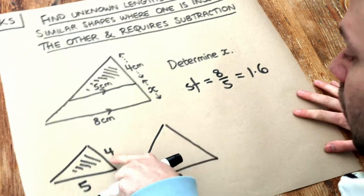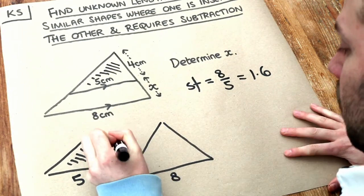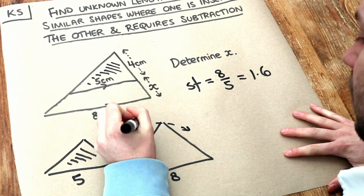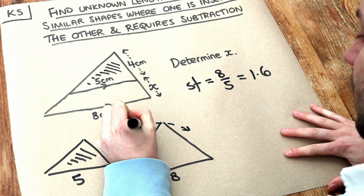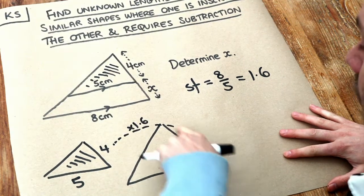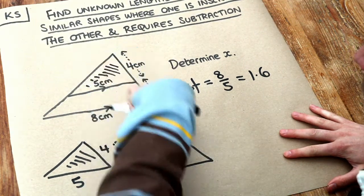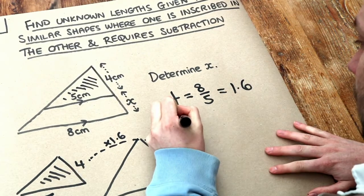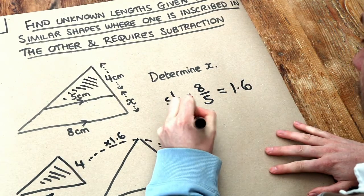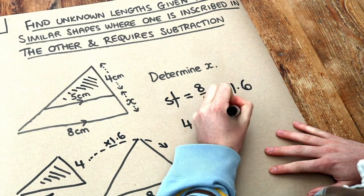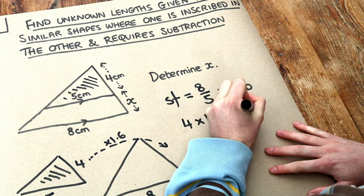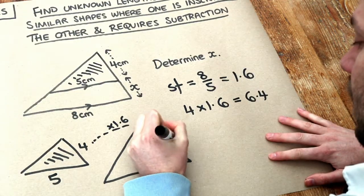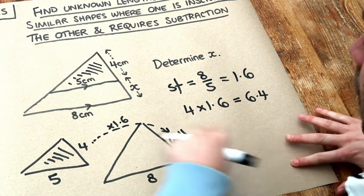Now we can multiply that 4 by the scale factor of 1.6 to find the corresponding length on the bigger triangle. 4 times 1.6 is 6.4 centimetres. So that means this length on the bigger triangle is 6.4 centimetres.